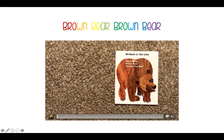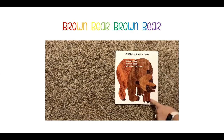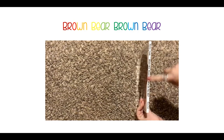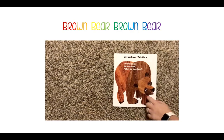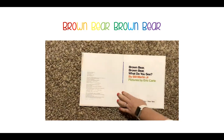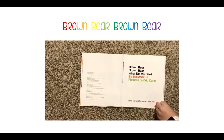Today we're going to read the story Brown Bear, Brown Bear, What Do You See? by Bill Martin Jr., illustrated by Eric Carle. This is the front cover. This is your spine. This is the back cover. I'm going to flip it over and we're going to start with the front cover. The author is Bill Martin Jr. and it's illustrated by Eric Carle.